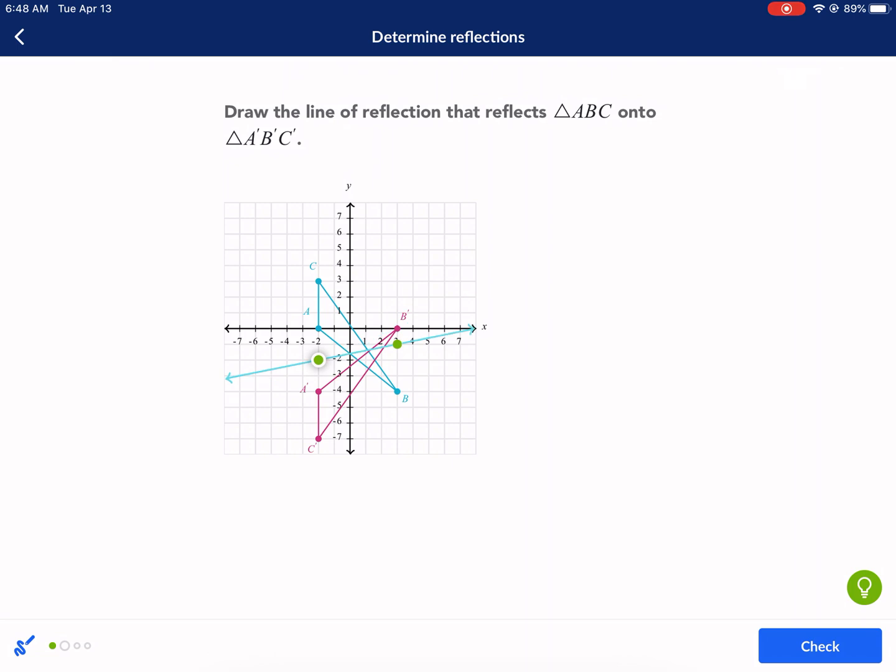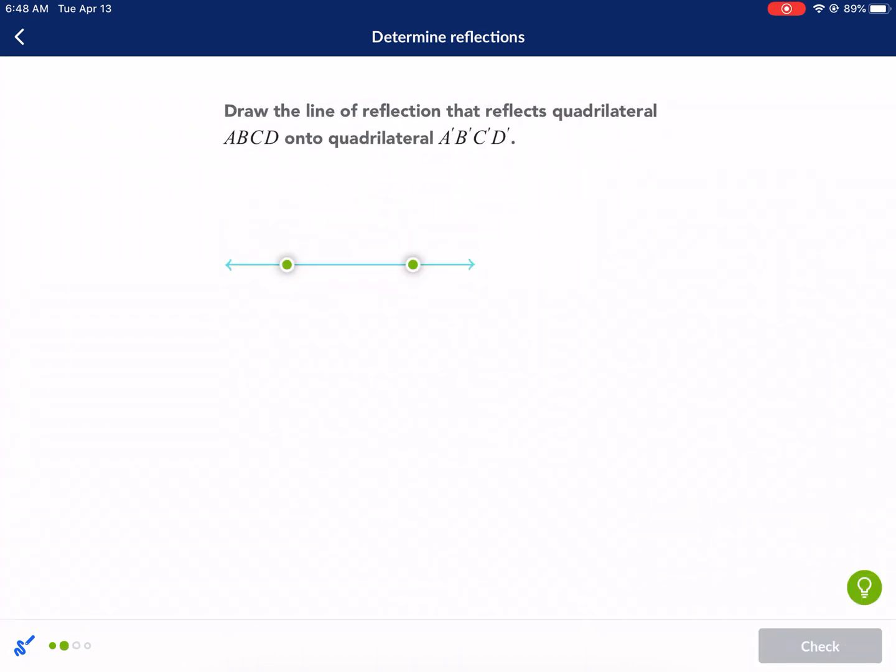I'm going to do the same thing for B. So I'm going to go one, two, three, four. So two is my halfway point. So my line of reflection should look like that. Next question.